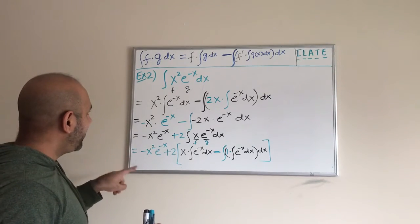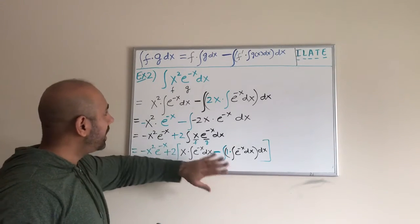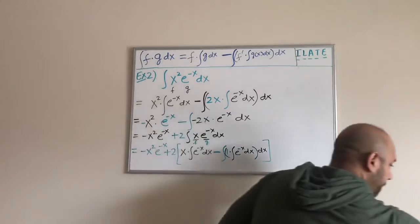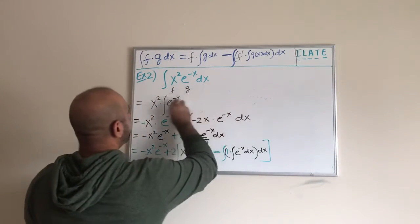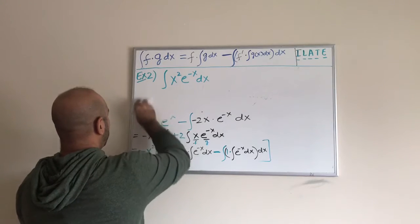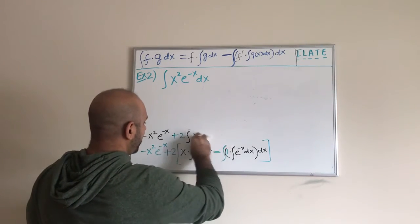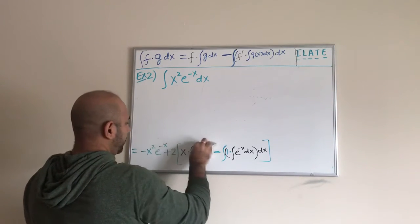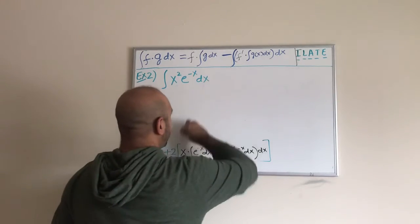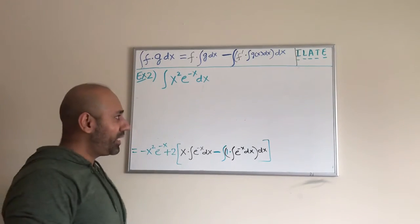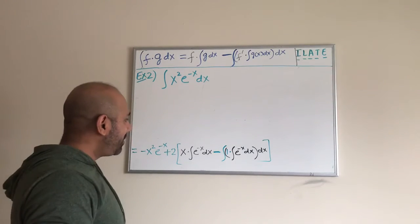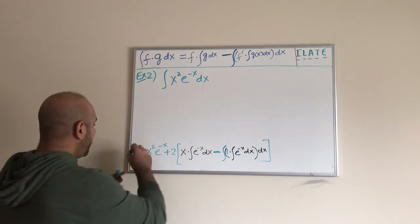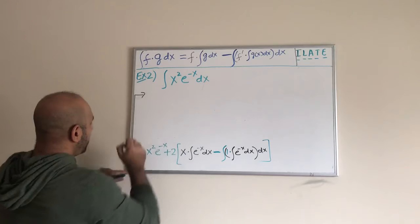Now we have to simplify the piece inside the square brackets, then distribute the 2, and see where that leads us. Since I don't have room to extend this work, I'm going to get rid of some of the intermediate steps — I'm really sorry about it. I'm doing this in my apartment so I can't have a super huge board, and I have to squeeze everything into this small board. So let us go from here.